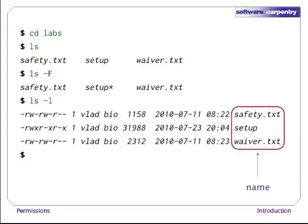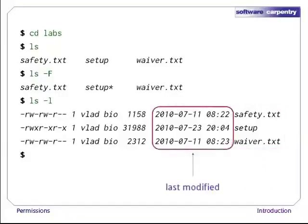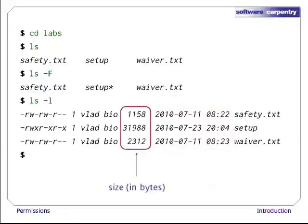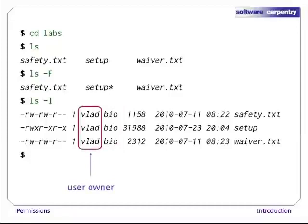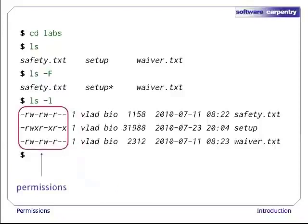It's a lot of information, so let's go through the columns in turn. On the right side we have the files and directories names. Next to them, moving left, are the times they were last modified. Next to the modification time is the file's size in bytes. Next to that is the ID of the group that owns it and of the user that owns it. The column on the left that we care about most shows the file's permissions, i.e., who can read, write, or execute it.